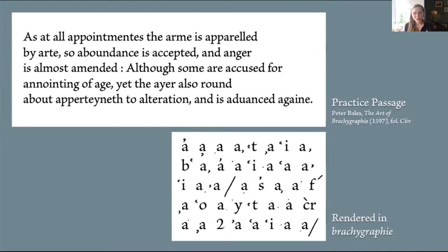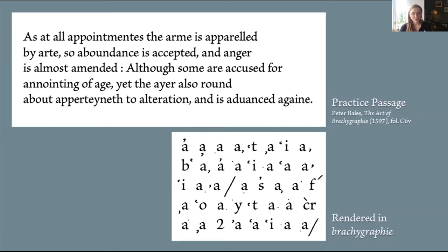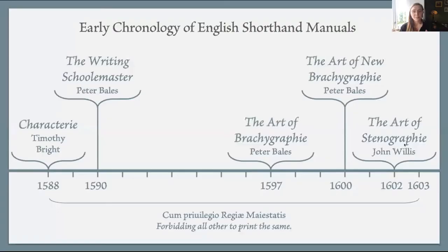The big takeaway is that neither of these systems is really very good, but what's interesting is that the concept of shorthand they promised nevertheless captured the public imagination even though the inventions themselves fell short. As early as 1589 — just one year after Bright's manual was published — one starts to find mentions of shorthand in the prefaces to printed sermons, claiming to have been taken in shorthand by members of the audience. Just because something says it was taken down in shorthand doesn't mean it actually was.